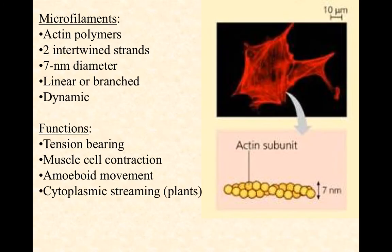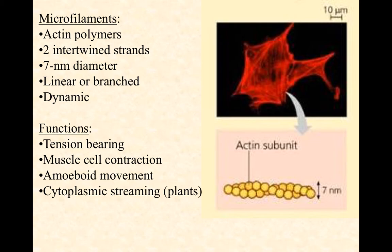Microfilaments, also called actin filaments, are the smallest. Actin is the protein polymerized into a single strand, and then two of those strands are twisted around each other, forming a diameter of about seven nanometers. They can be linear, branched, or highly dynamic — polymerizing and depolymerizing quickly. Like intermediate filaments, they are involved in bearing tension for a cell, and are very important for muscle cell contraction.